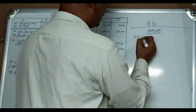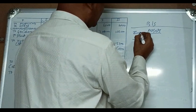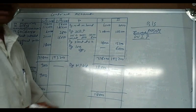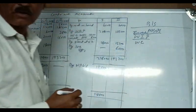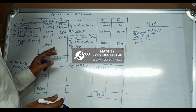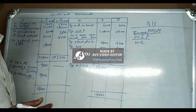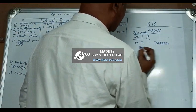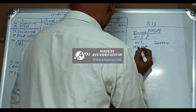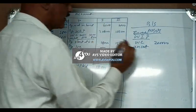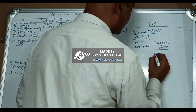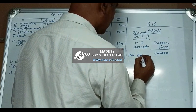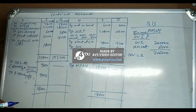Now for the balance sheet, the work in progress is shown as an asset. Work certified for the first contract is two lakh rupees. Work uncertified is six thousand. Together that is two lakh six thousand. Less cash received gives the net work in progress figure in the balance sheet.